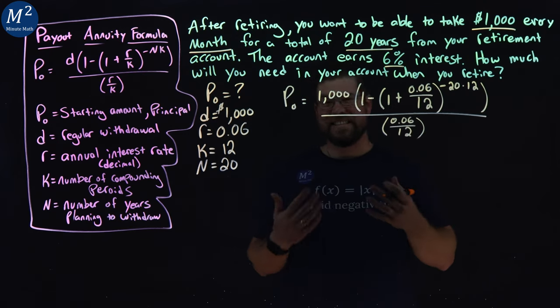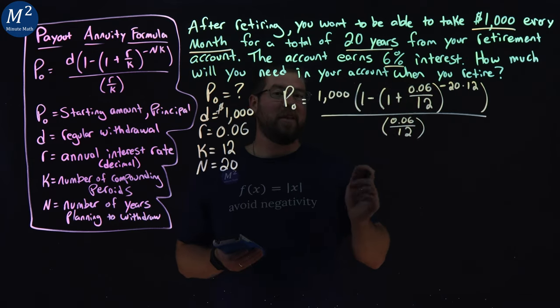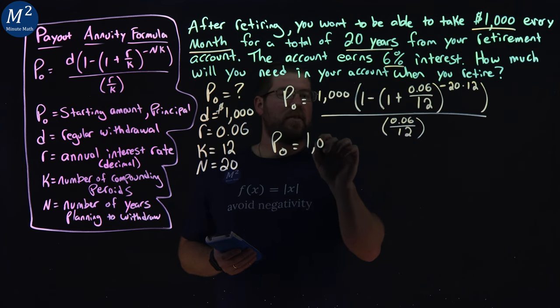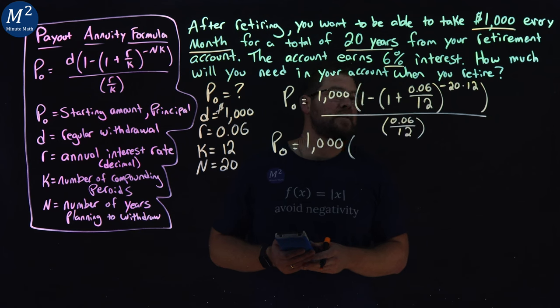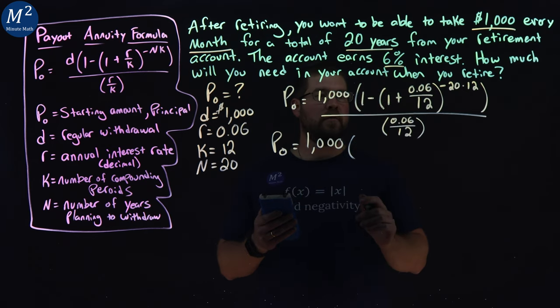And so now we just need to simplify where we can. I'll be using my calculator here. I'm not doing all this in my head. We'll just do it in parts. P sub 0 equals, we have 1,000 stays on the outside here. Now that 1 plus 0.06 over 12, 0.06 divided by 12, and we add 1 to that and we get 1.005.